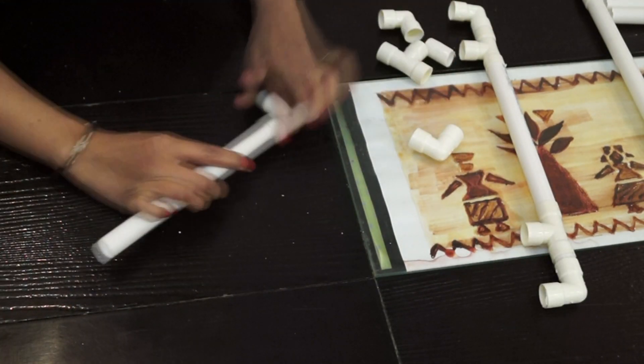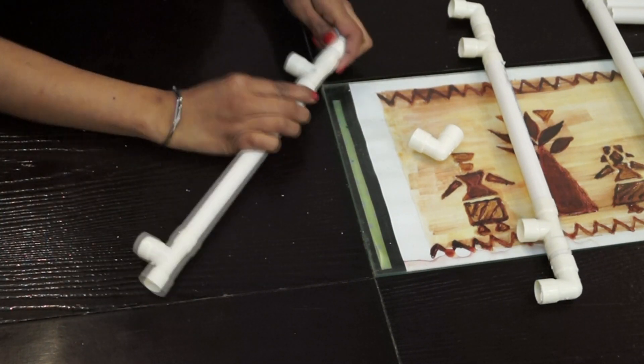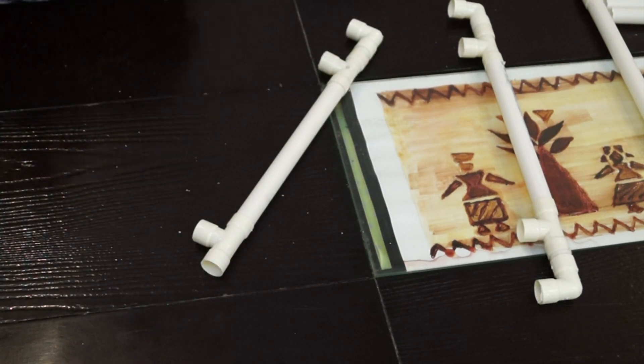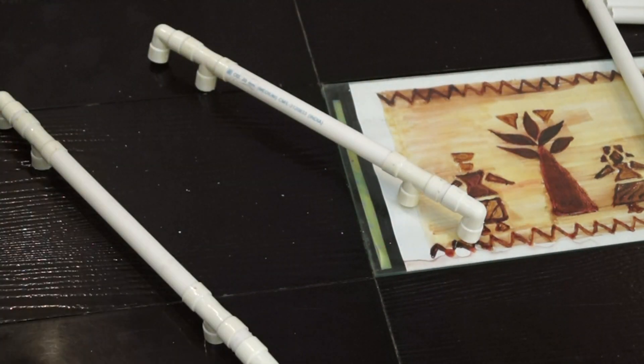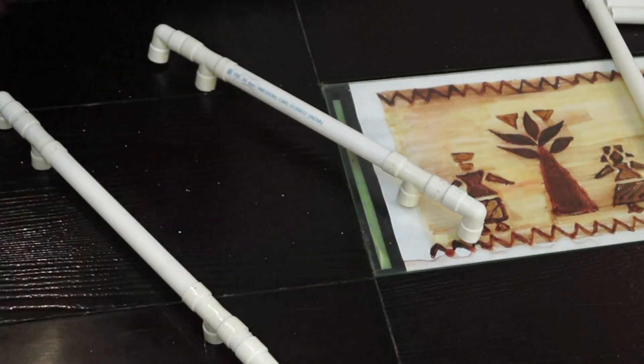So in the same way, take another 10 inch pipe and attach both the T-joint and the bend. The way right here I am doing. So this is how the 2 sides of the table is already made.